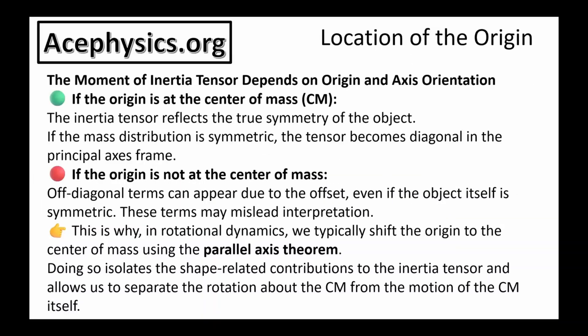To conclude, the location of the origin matters. The moment of inertia tensor depends on both the origin and axis orientation. If the origin is at the center of mass, the inertia tensor reflects the true symmetry of the object, and for symmetric mass distributions the tensor becomes diagonal in the principal axis frame. If the origin is not at the center of mass, off-diagonal terms can appear due to the offset even if the object itself is symmetric — which is why in rotational dynamics we typically shift the origin to the center of mass using the parallel axis theorem, isolating shape-related contributions and separating rotation about the center of mass from the motion of the center of mass itself.